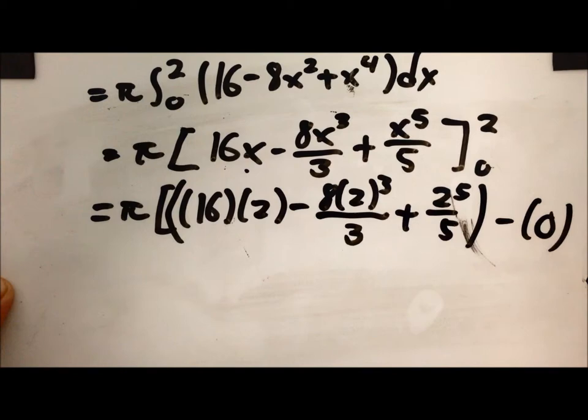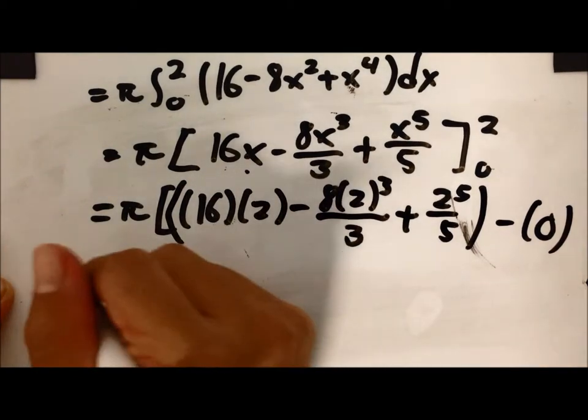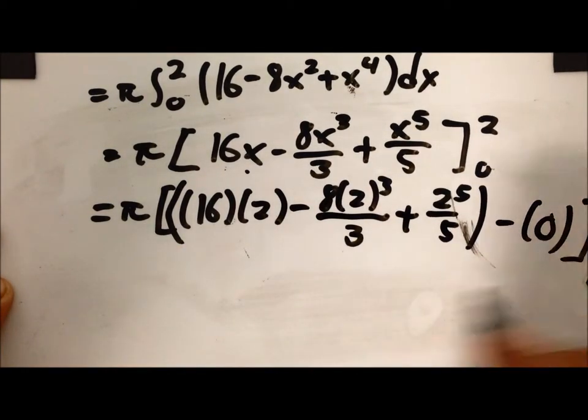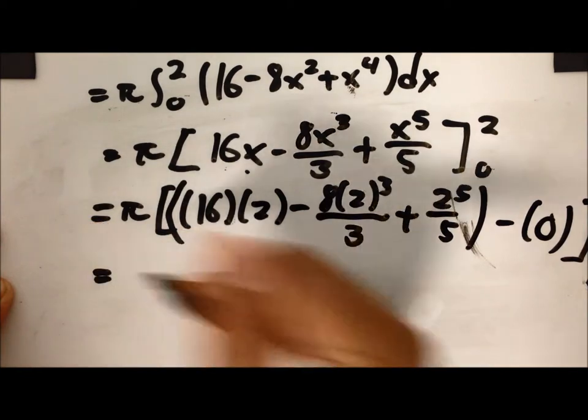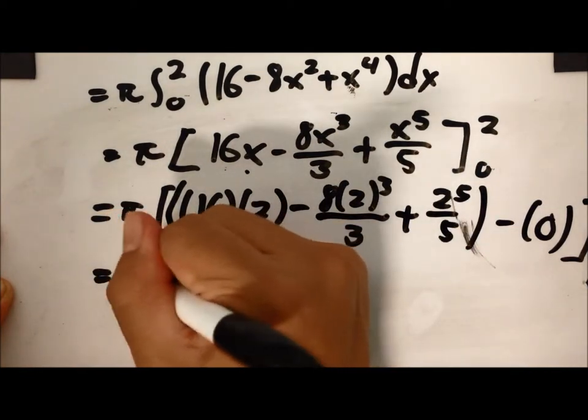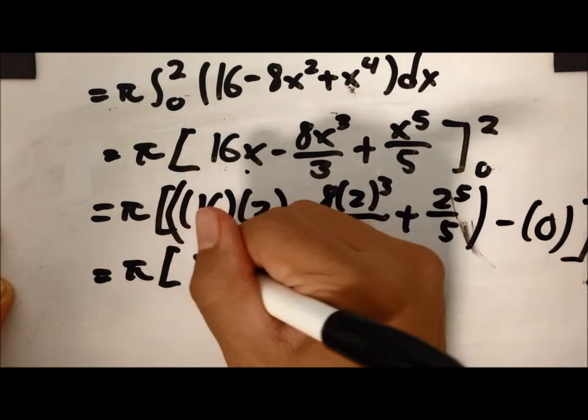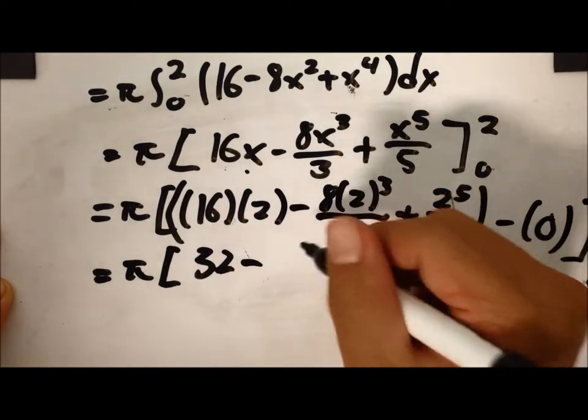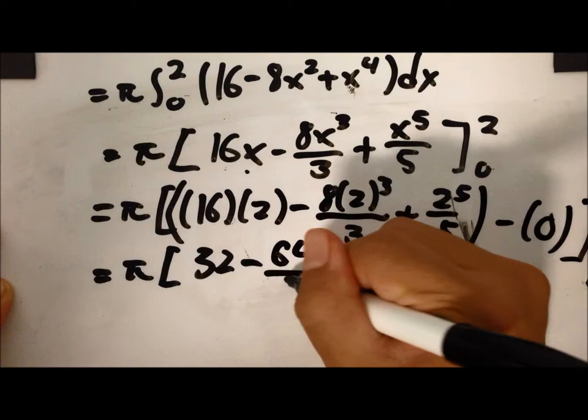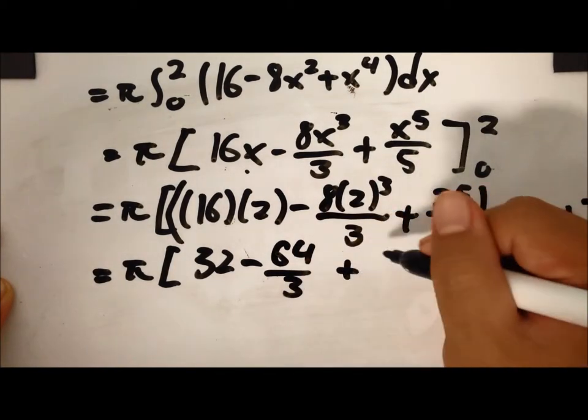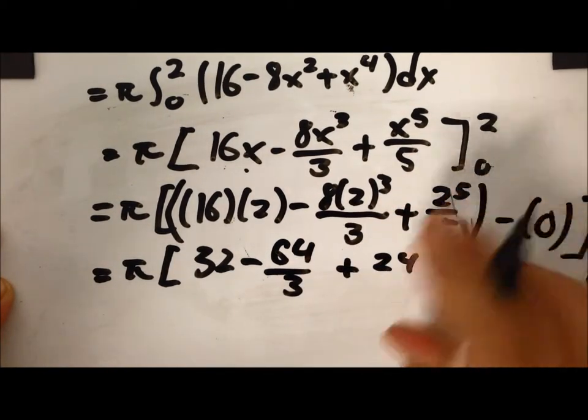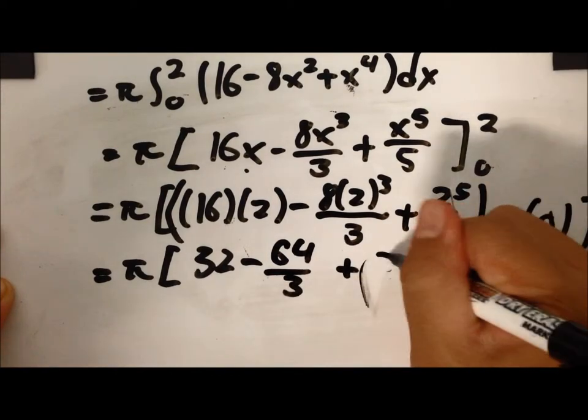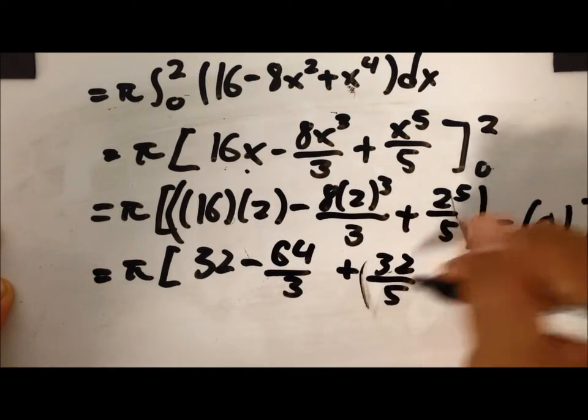And because there's x's in every term, we can just say that's 0. Now we simplify further, which would be pi 32 minus 64 over 3 plus 32 over 5.